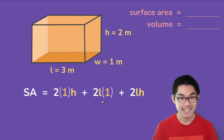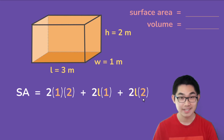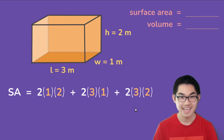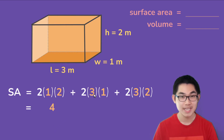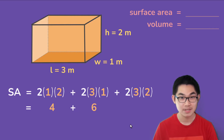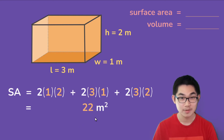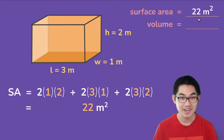The next step is to substitute the height, which is 2 meters, so we put the number 2 in here and here. The last step is to substitute the number 3 into the length. Now, 2 times 1 times 2 is 4, 2 times 3 times 1 is 6, and 2 times 3 times 2 is 12. So 4 plus 6 is 10, and 10 plus 12 is 22 meters squared — that is our answer.